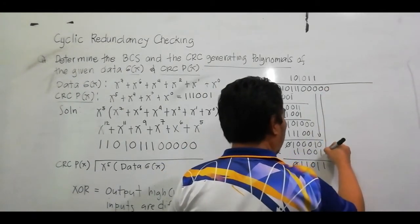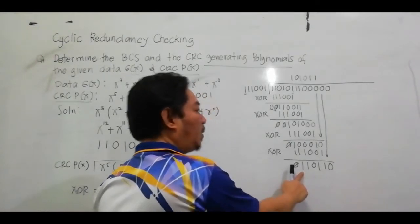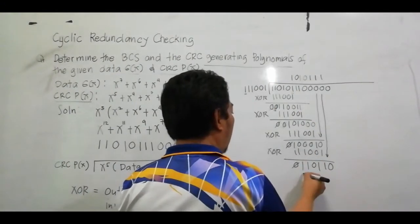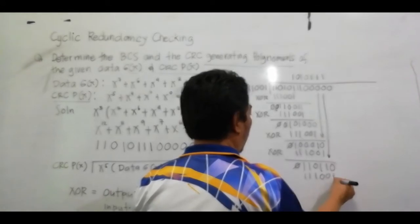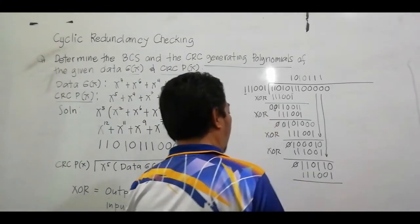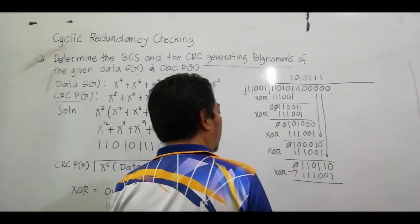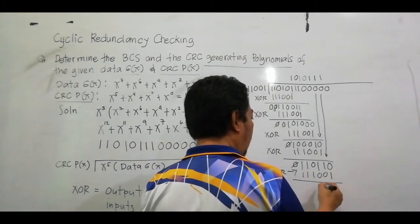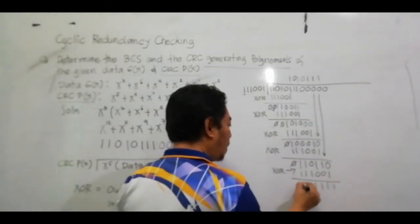Cancel out and bring down another 0. Most significant bit is 1, so quotient is 1. Multiply: 1 1 1 0 0 1. XOR: 0,1=1; 1,1=0; 1,0=1; 1,0=1; 1,1=0; 1,1=0.